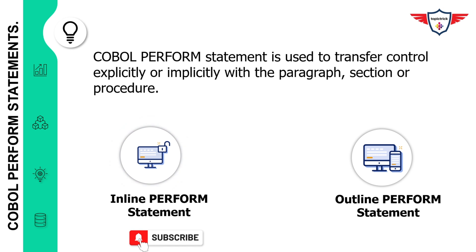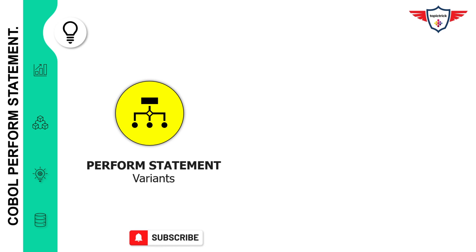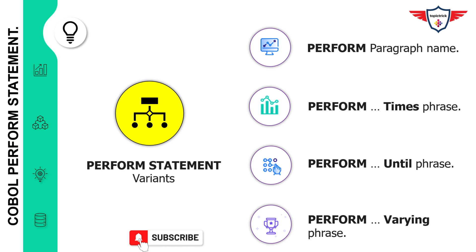An example of an inline perform is the PERFORM UNTIL statement. The outline perform statement, however, is mainly used to execute a set of statements or a piece of logic included in a separate paragraph or section. An example of an outline perform is a normal PERFORM statement where you use the PERFORM keyword followed by a paragraph name or section name. There are four different formats of the COBOL PERFORM statement: PERFORM with a paragraph name, PERFORM with the TIMES phrase, PERFORM with the UNTIL phrase, and PERFORM with the VARYING phrase.